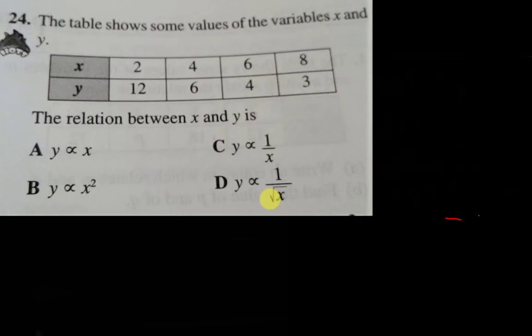In order to find the answer faster, the strategy for objective or multiple choice questions is to actually cancel out the options which are not possible.